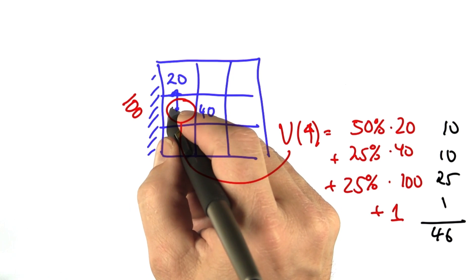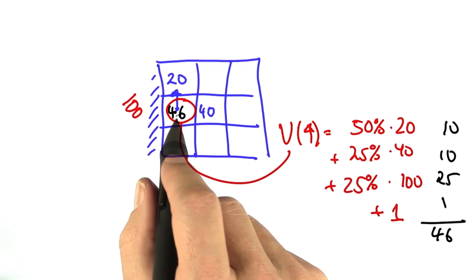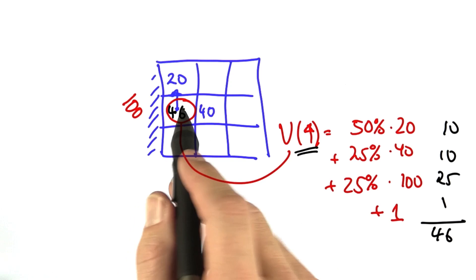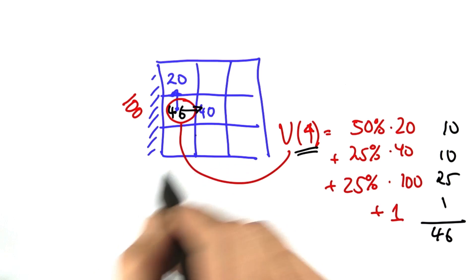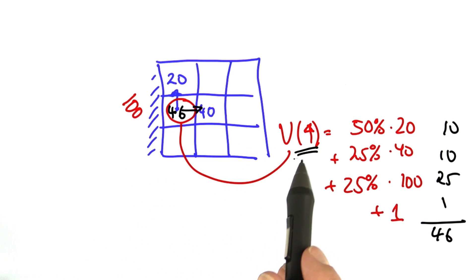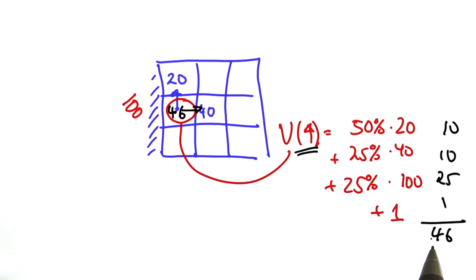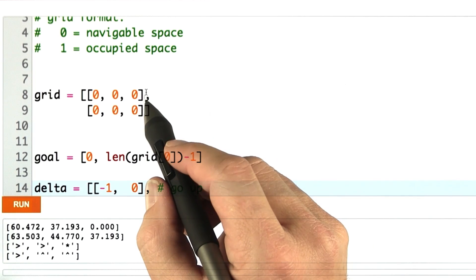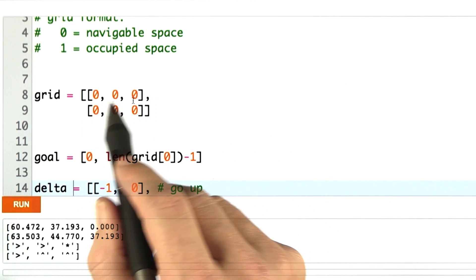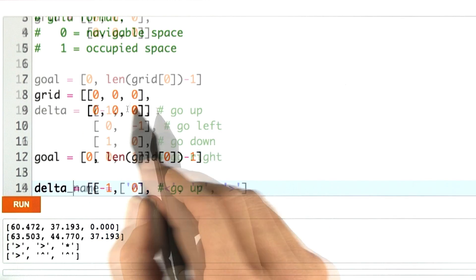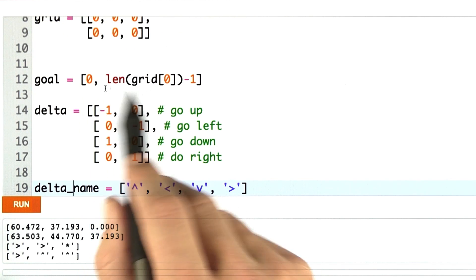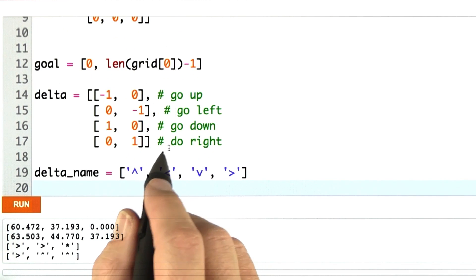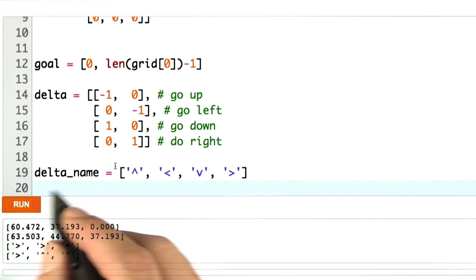I want your update to produce 46 for that cell for the specific action of going up. Of course, the value might be smaller because there might be a better action like going right. Your programming assignment is as follows: I will give you a grid — in this case, entirely unoccupied — and as before, a goal state and a set of actions. I want you to program dynamic programming all the way to convergence.